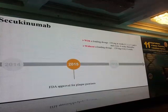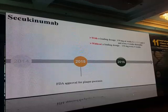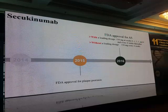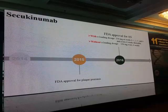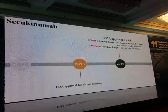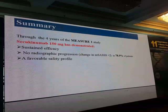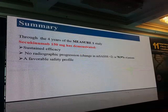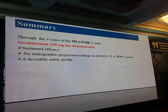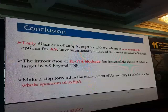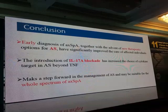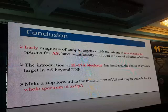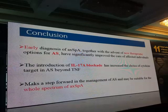Secukinumab was approved in 2015 for plaque psoriasis and in 2016 received FDA approval for AS. With loading dose: 150 mg at weeks 0, 1, 2, 3, and 4, then every 4 weeks. Without loading dose: 150 mg every 4 weeks throughout. In summary, through four years of MEASURE 1: sustained ASAS20, ASAS40, and ASAS30 responses, no radiographic progression, and a favorable safety profile. Early diagnosis of the key target in AS beyond TNF represents a step forward in the management of AS and may be suitable for the whole spectrum of axial SpA.